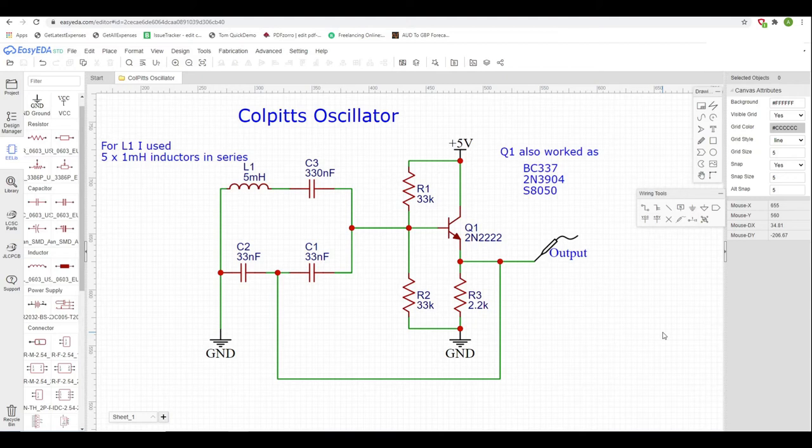Hi, in this video we're going to build a Colpitts oscillator that will produce a sine wave slow enough to observe using an Arduino.